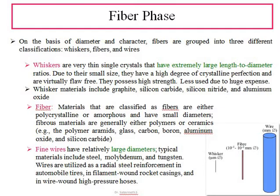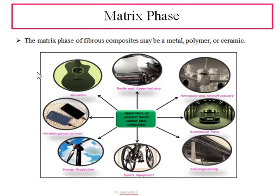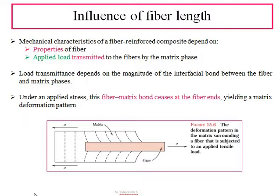The matrix phase of a fiber composite can be from anywhere — it can be from metal, polymer, or ceramic. The mechanical characteristics of the composite depend on two factors: first, the properties of the particular fiber, and second, the applied load transmitted to the fiber. These are the two important factors.